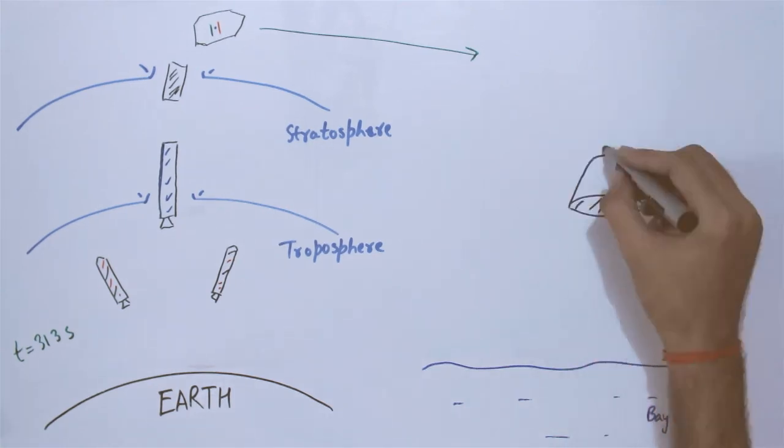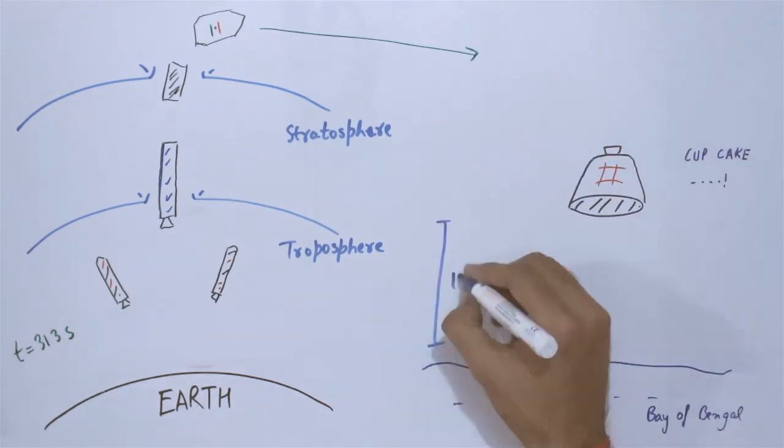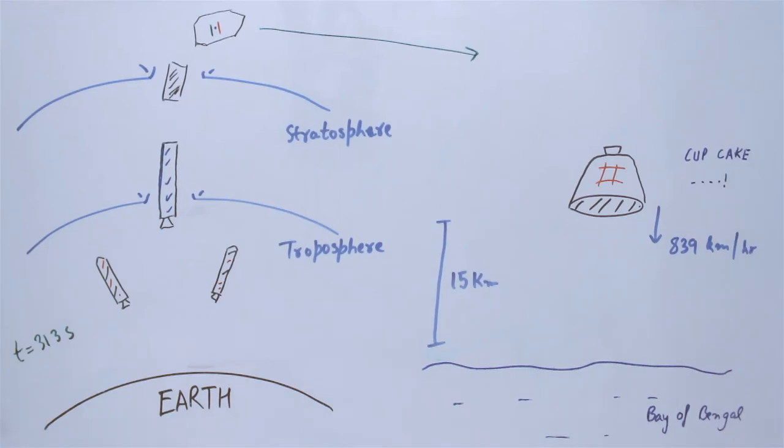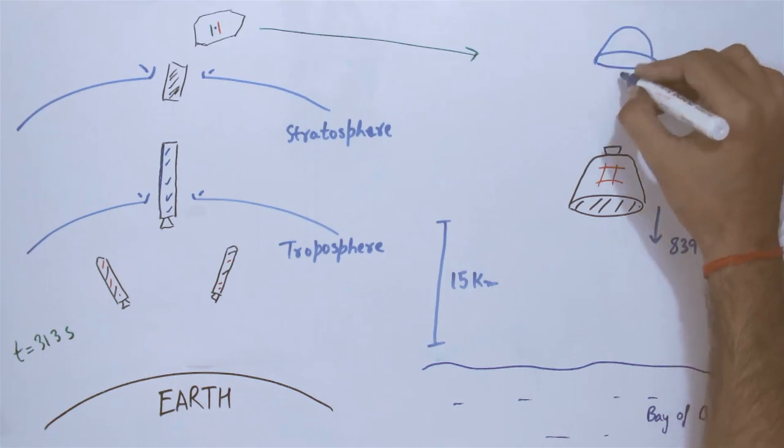At a height of about 15 kilometers, with the capsule traveling at 839 kmph, the process of deploying the parachutes begins. The crew module carries two independent sets of parachutes, both of which are simultaneously deployed.